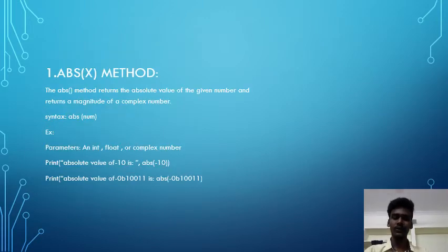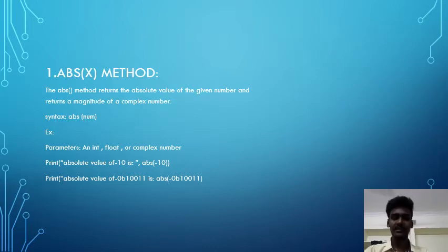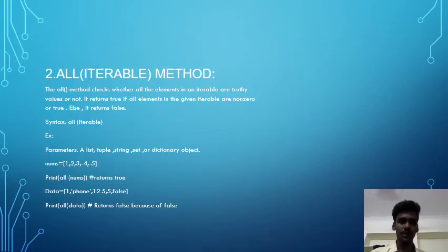The very first one is abs(x) method. The abs() method returns the absolute value of the given number, and returns the magnitude of a complex number. Its syntax is abs(num), and an example is given below.